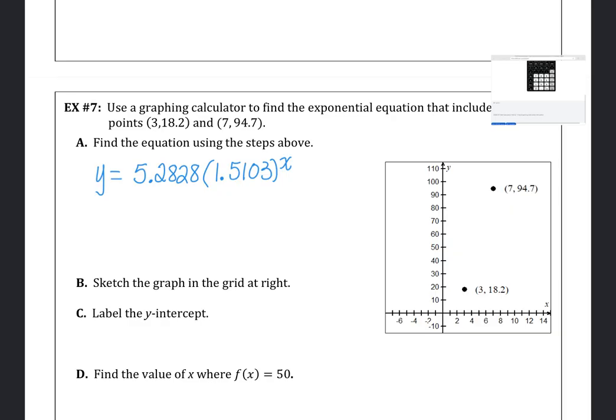We got the graph. By looking at the graph screen on the calculator, we can go back and check that out. It appears like that. We want to label the y-intercept, so the y-intercept is substituting 0 in there for our x value, which would be the a value 5.2828,